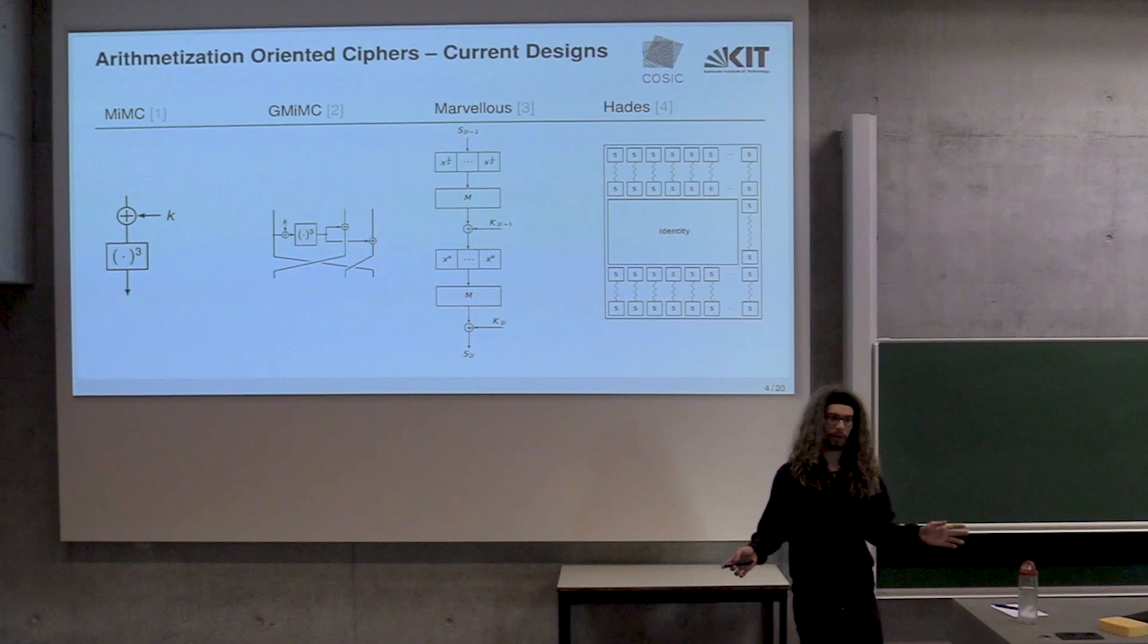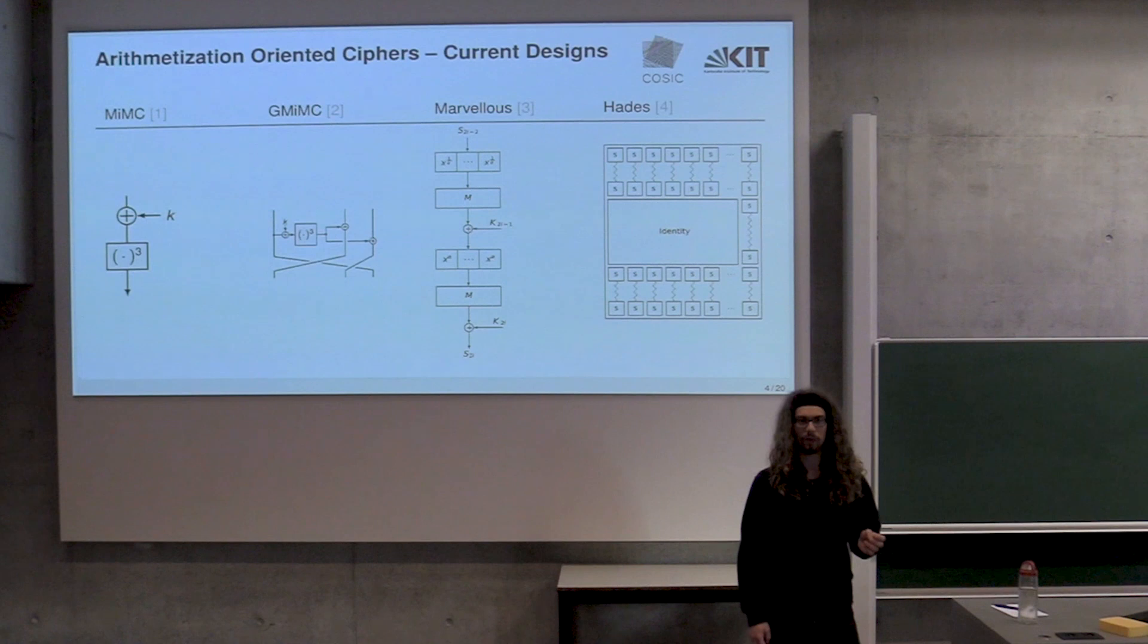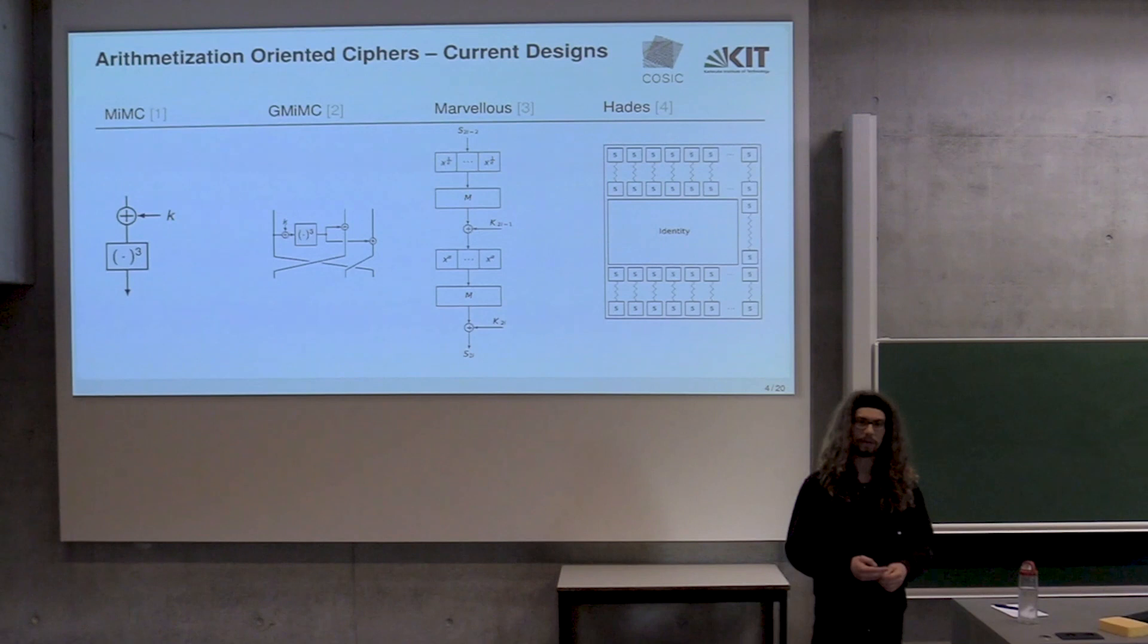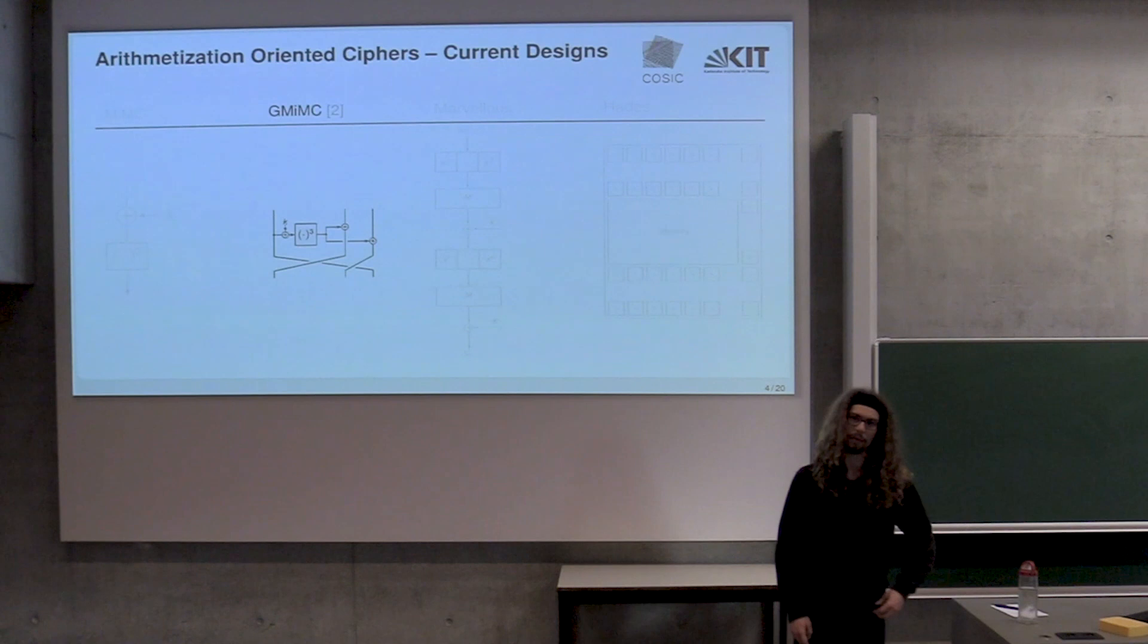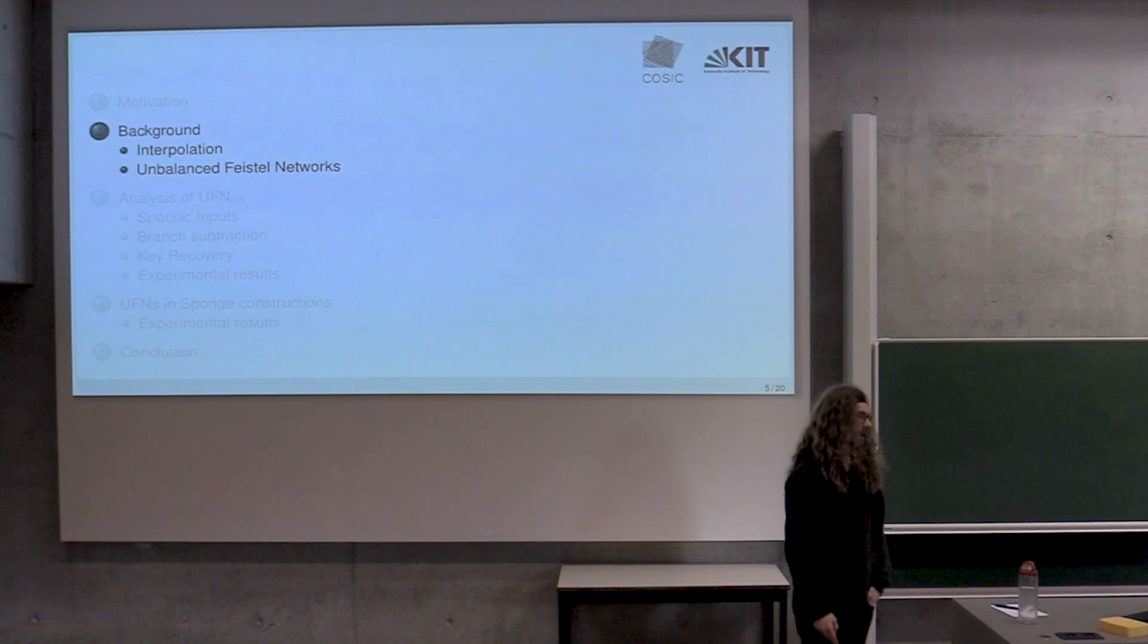Just to give you a quick overview, in the last four or five years, there's basically four big schemes that have emerged on how to do arithmetization-oriented ciphers. There's MiMC, Minimal Multiplicative Complexity. There's its generalized version GMiMC. There's the Marvellous cipher suite, designed by people here at COSIC like Tomer and Seaman. And there's the Hades suite. Today we're going to focus on GMiMC.